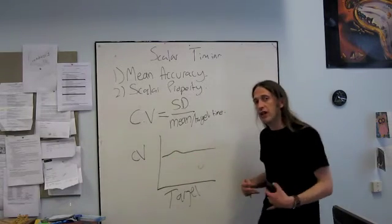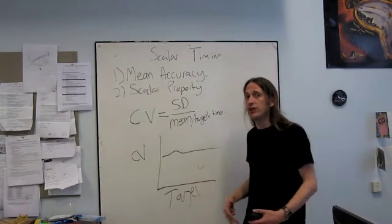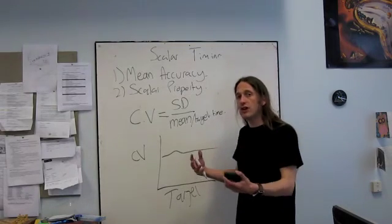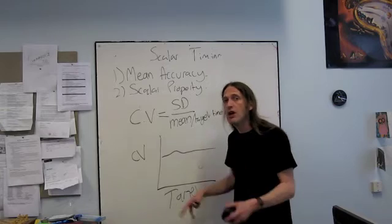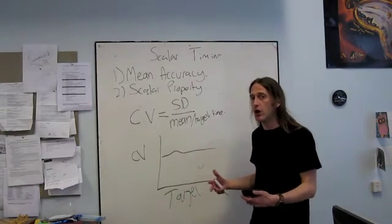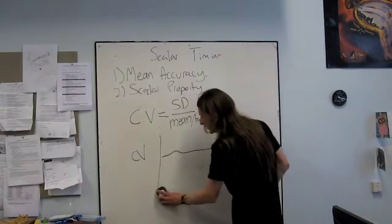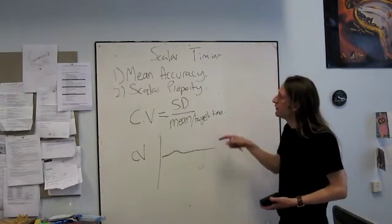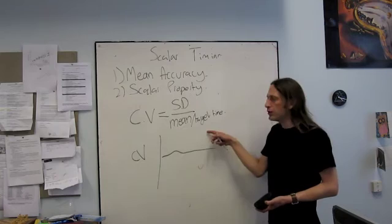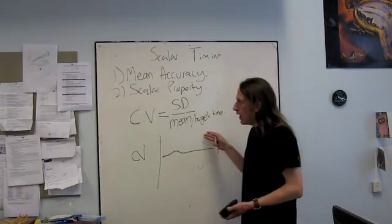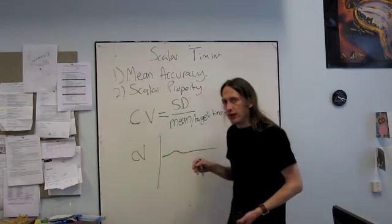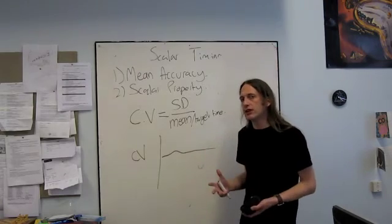So the scalar property is just saying that our variability or sensitivity scales up. If I double the duration that I'm asking you to time, I'll double how variable you are at timing it. That's all scalar property is. Okay, so that's one way we can prove that we have this scalar property. There are other ways of proving it, depending on what the timing task is that we've used.